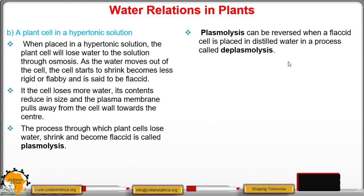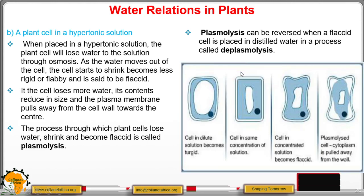This process of plasmolysis can be reversed when the flaccid or plasmolyzed cell is placed back in distilled water — that reversal is called deplasmolysis. The flaccid cell will gain water through osmosis and become turgid again. If you place the cell in a dilute solution it stretches toward the cell wall but will not burst; if placed in a hypertonic solution, the cell shrinks and becomes flaccid, with the cytoplasm pulled away from the cell wall.